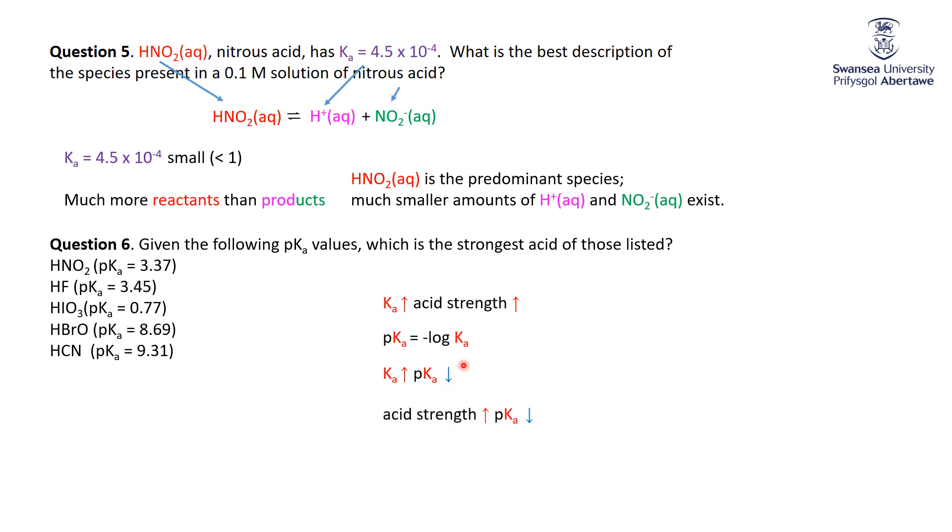As the acid strength goes up, the pKa goes down. In other words, the strongest acid is the one with the smallest pKa, which is 0.77. So 0.77, this is the strongest acid, then HNO2, then HF, and then HBrO.